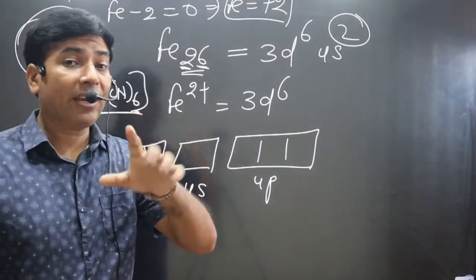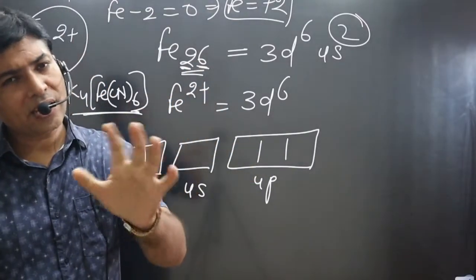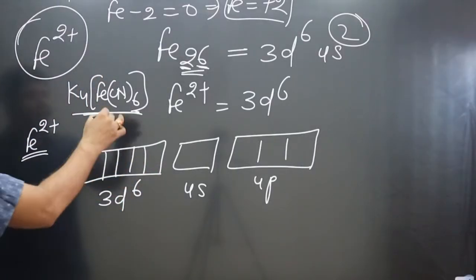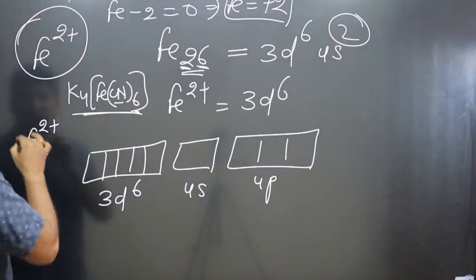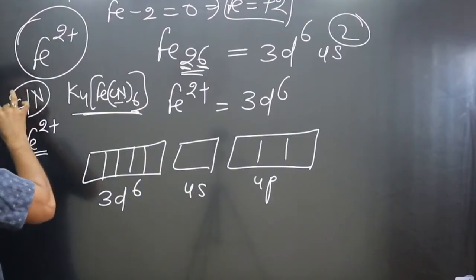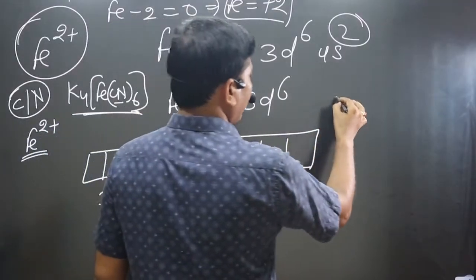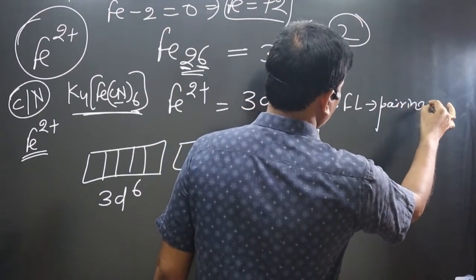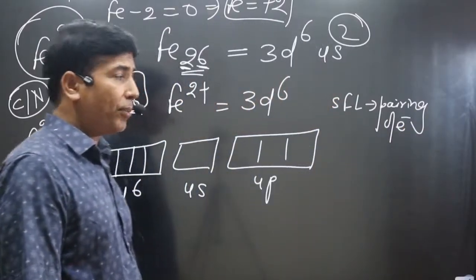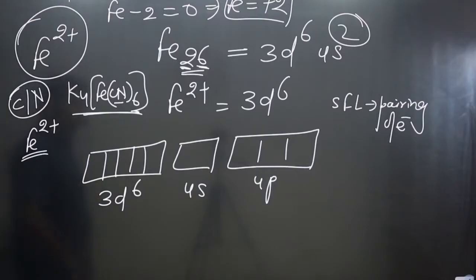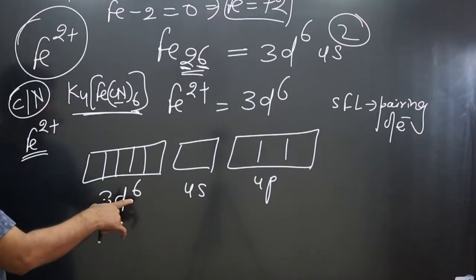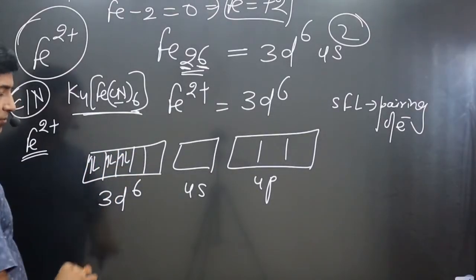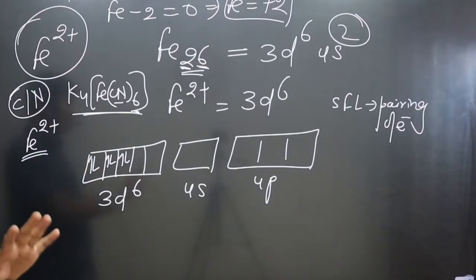The last step is to consider the effect of the ligand — whether it is a strong field or weak field ligand. Before filling electrons, we consider this. CN- is a ligand starting from carbon and nitrogen, which is considered a strong field ligand. Strong field ligands cause pairing of electrons — we do not follow Hund's rule. We start filling all 6 electrons in paired form: pairs of 1&2, 3&4, and 5&6.